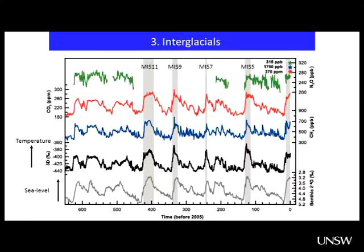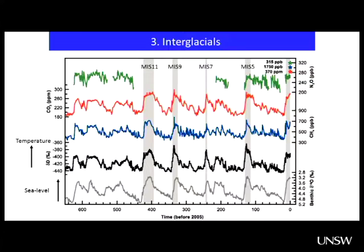I just wanted to briefly talk about interglacials. Interglacials are obviously very important and now becoming one of the major areas of study because they are a future analog — or the best analog to future climate we have. Here we are in our current interglacial, with fairly warm Antarctic temperature, high atmospheric CO2 — still pre-industrial obviously — and high sea level. We can go back to the last interglacial, MIS-5, about 120,000 years ago, with high temperature, high CO2, and high sea level, and we have MIS-7, MIS-9, and MIS-11. The two interglacials of most interest are MIS-5 and MIS-11.